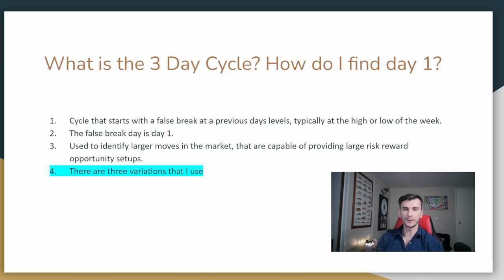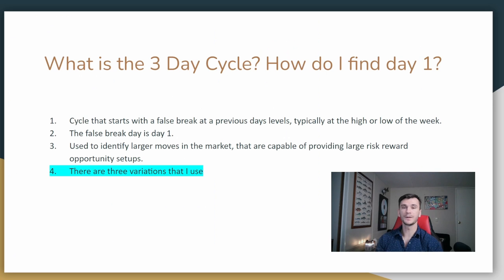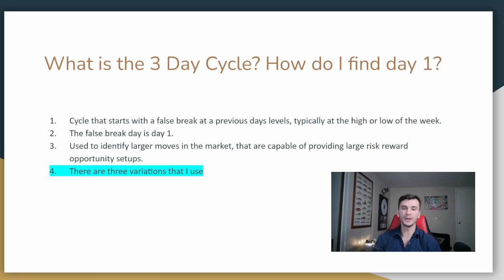The rules for finding day one are that day one is identified by a false break at the high or low of the week, where the breakout has failed and pulled back inside of the previous day's range. There are a few different variations of that, and I'm going to show you those in the next three slides. The three day cycle is used to identify larger trade setups where risk to reward is much higher than small scalps.